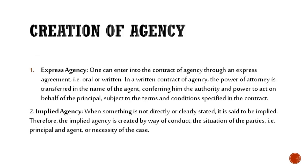Creation of agency — agency create कैसे होती है। First: express agency। Express का मतलब oral या written। One can enter into the contract of agency through an express agreement। Written contract के through agency create करते हैं तो power of attorney का होना जरूरी है, जो agent के नाम से होगी। Power of attorney मतलब principal ने confirm किया है कि उसके powers अब agent इस्तेमाल कर सकता है — contract के terms and conditions को ध्यान में रखते हुए।